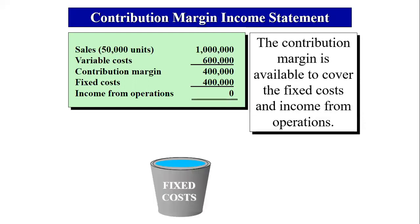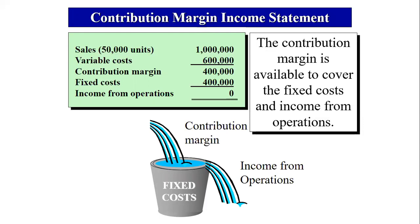When there's no net income, there's neither a loss nor a profit — this is typical of companies in their startup phase. The contribution margin is available to cover fixed costs and income from operations. This means the contribution margin must cover all your fixed costs, and once it does, the company will have income.